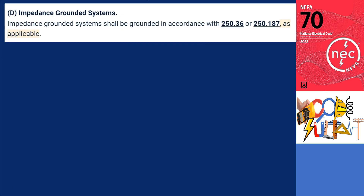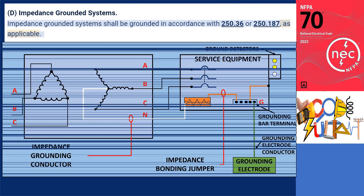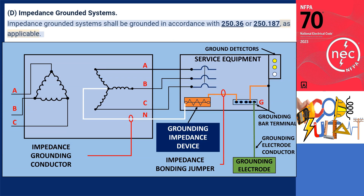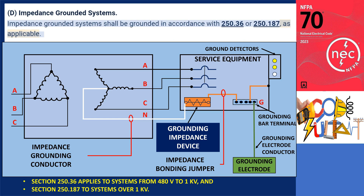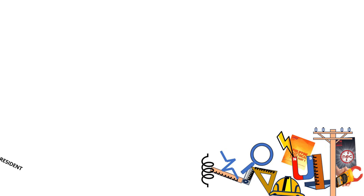Section 250.20D — Impedance Grounded Neutral Systems. Impedance Grounded Neutral Systems shall be grounded in accordance with section 250.36 or section 250.187. These systems are grounded, but through an impedance device rather than through a solid connection. Section 250.36 applies to systems from 480 volts to 1 kilovolt, and section 250.187 applies to systems over 1 kilovolt. Thank you all for watching.